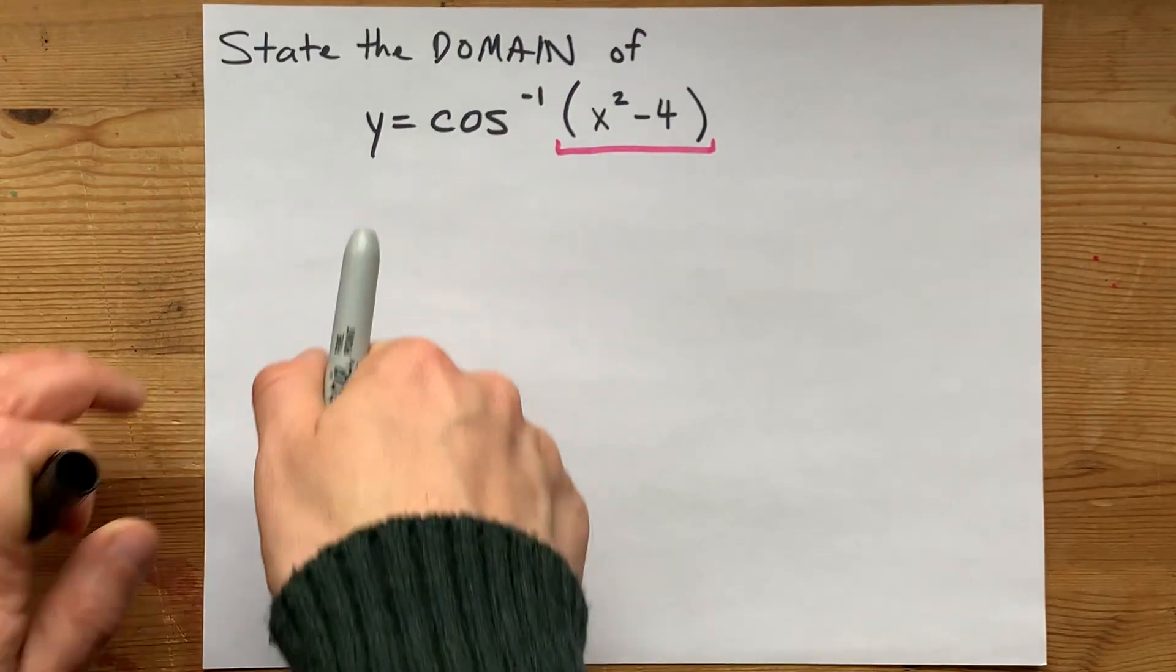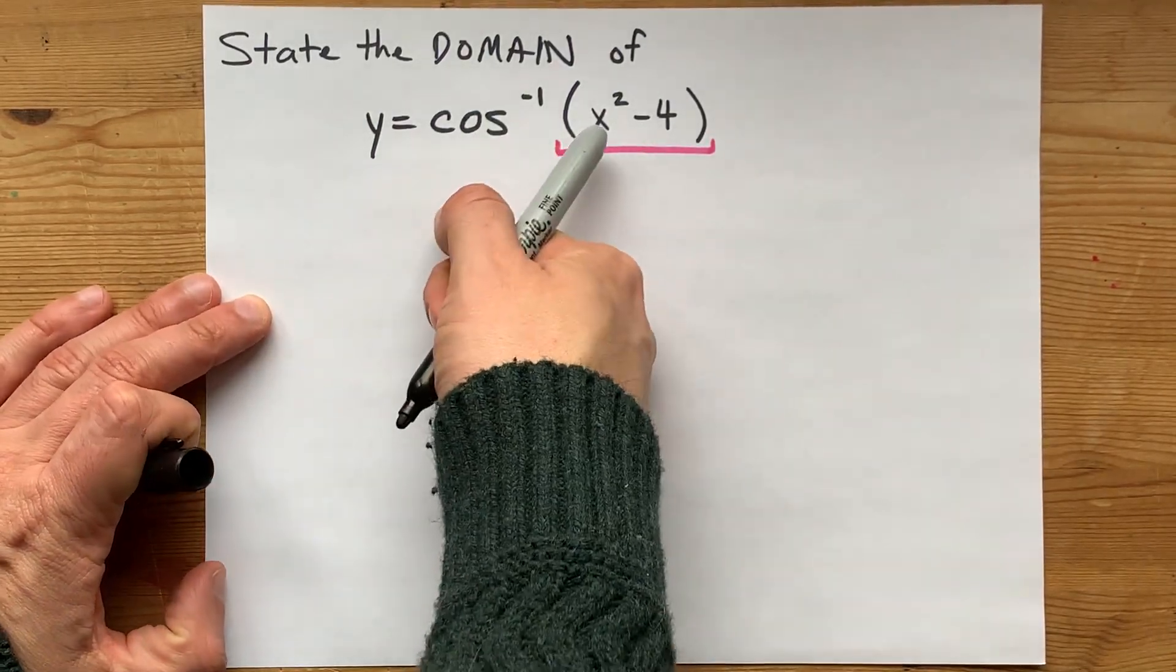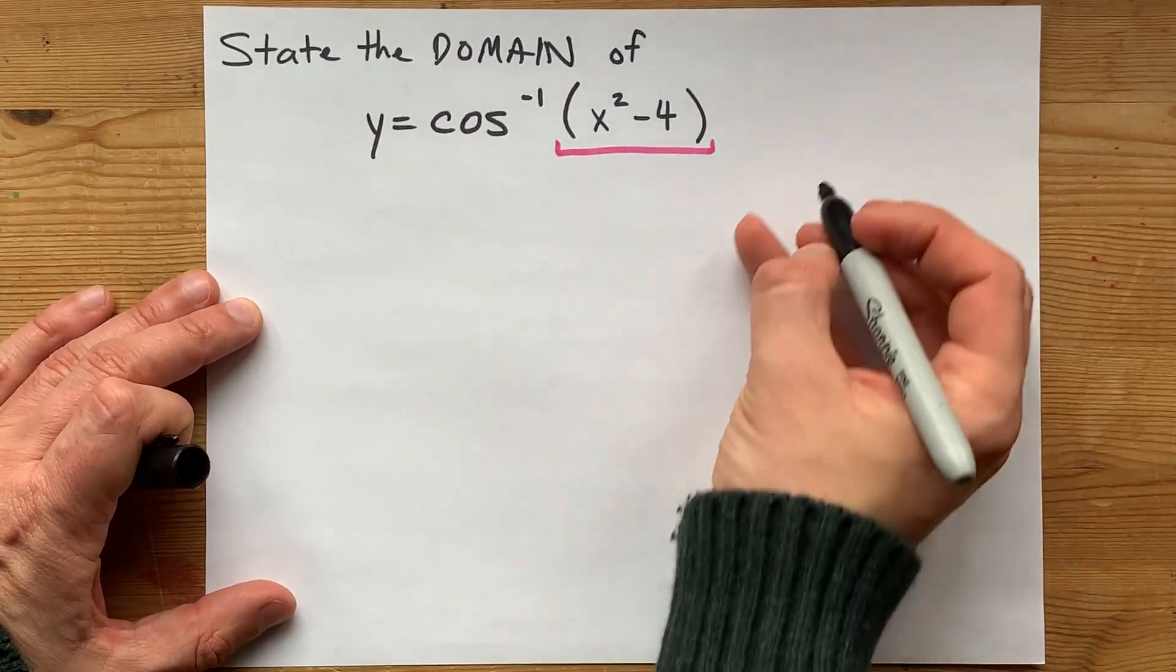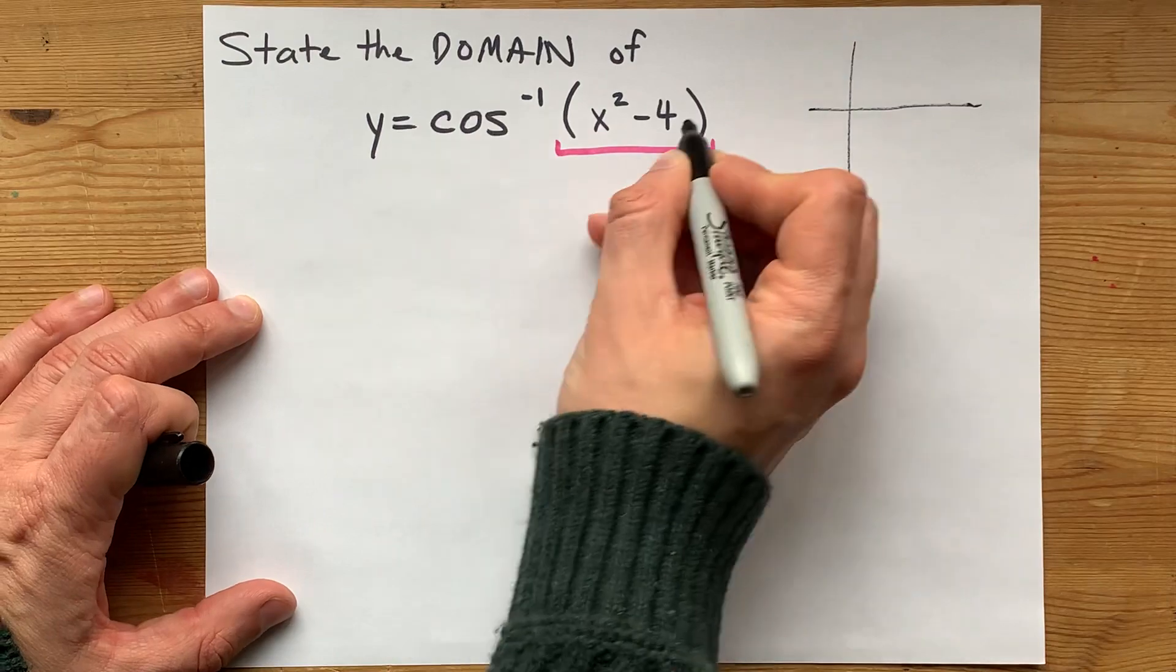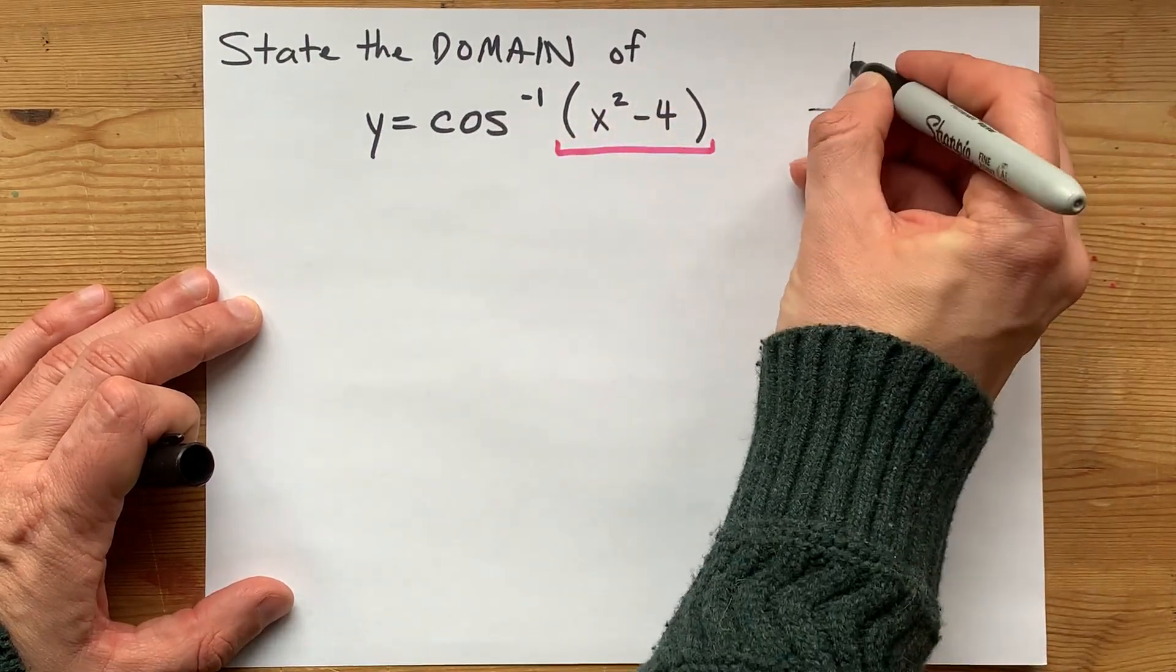Let's state the domain for y equals the cos inverse of x squared minus 4. Now the first question I want to ask you is, what numbers are you even allowed to take the cos inverse of?